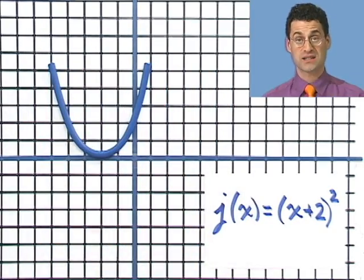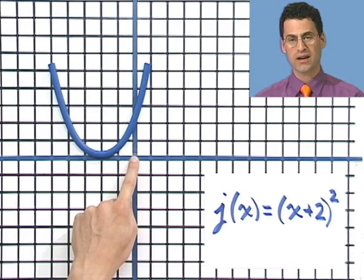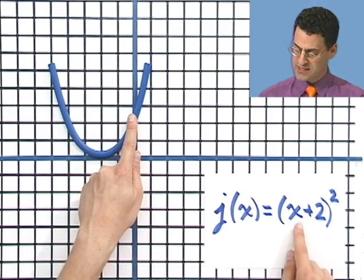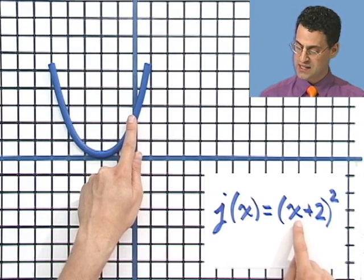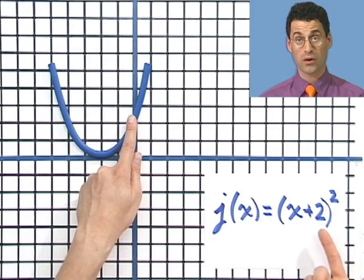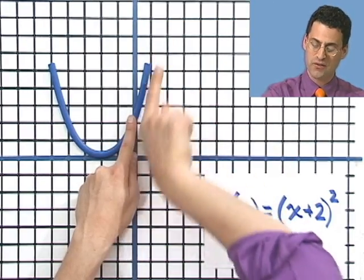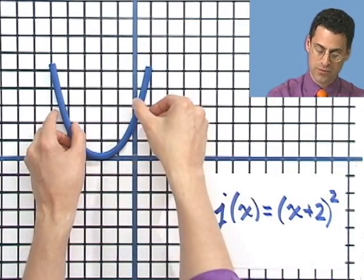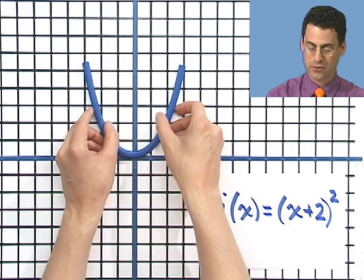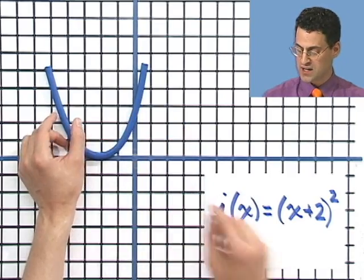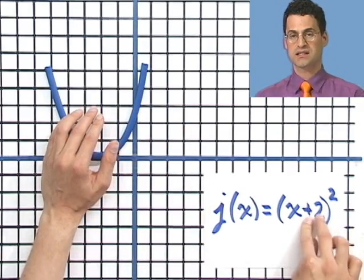Because notice, for example, when I plug in 0 now, this says I should be getting 4. And what does this say? If I plug in 0 here, I see 0 + 2 squared, which is 4. So in fact, by shifting this way, the higher wings of the parabola start to move over to smaller values. Here I had to wait all the way to 2 to get to 4. Now I only have to wait to 0 to get to 4. So the bottom line is, when you see an x plus something, you shift to the left.